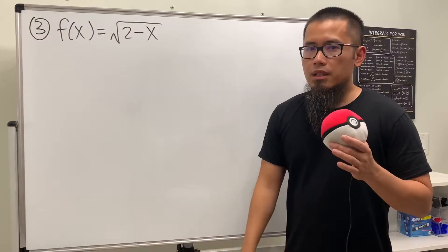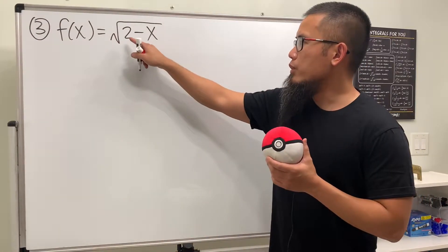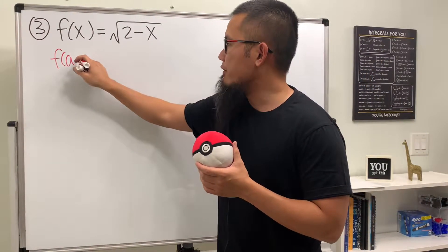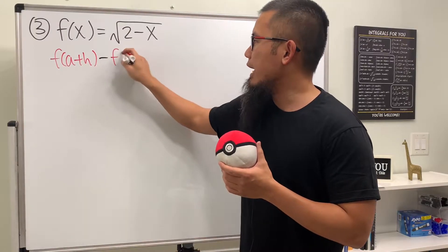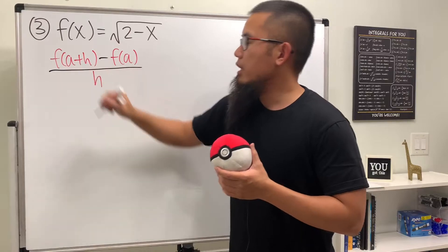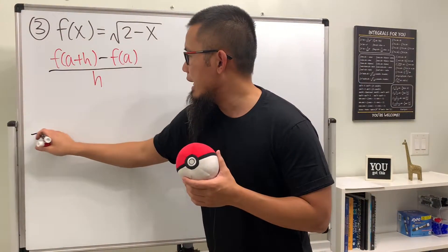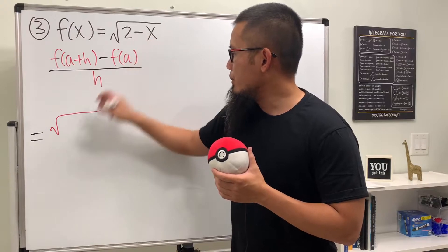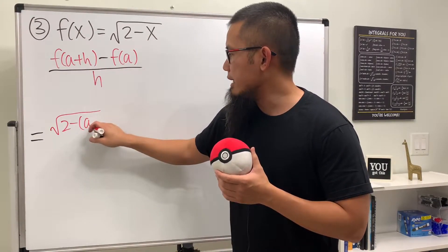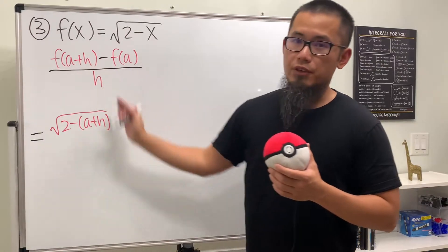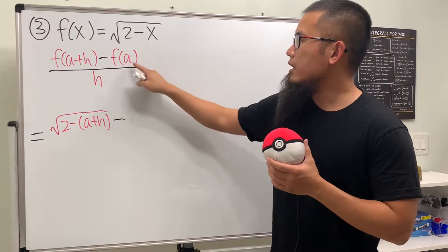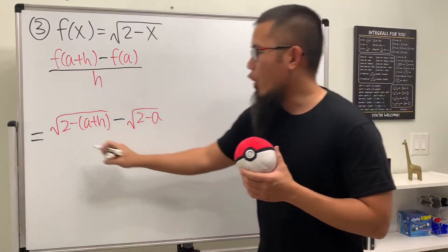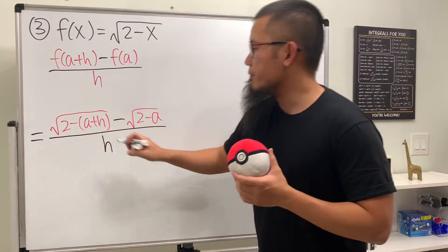For the third problem, we have a square root case: f(x) = √(2 - x). Using the difference quotient formula, we set up f(a+h) = √(2 - (a+h)) and f(a) = √(2 - a). So the expression is [√(2 - a - h) - √(2 - a)] divided by h.